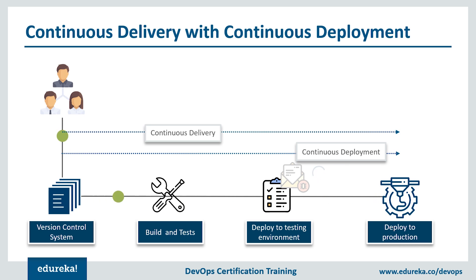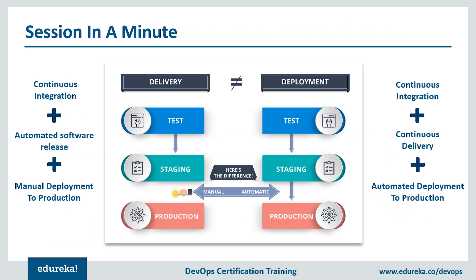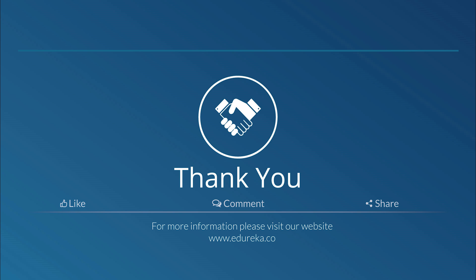The goal is the same: make the software development and release process faster and more robust. Continuous delivery is a capability you must have, and continuous deployment is an option you might choose based on the kind of product you have. In short, continuous delivery equals continuous integration plus automated release plus manual deployment to production. Continuous deployment equals continuous integration plus continuous delivery plus automated deployment to production.